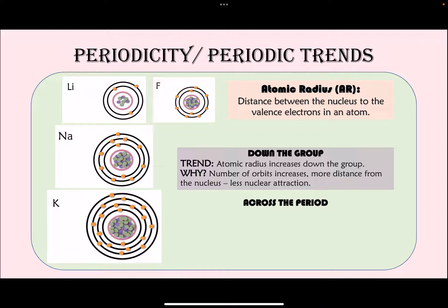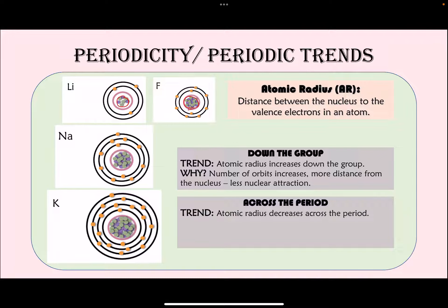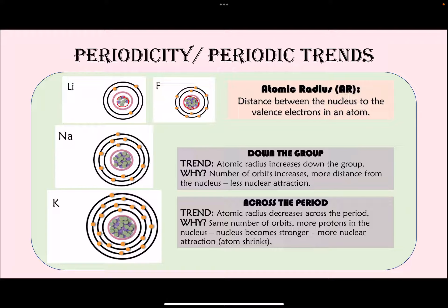Going across the period, comparing lithium and fluorine, both have the same number of orbits — but atomic radius actually decreases across the period. This is because going from lithium to fluorine the nucleus becomes heavier, meaning more protons and more nuclear attraction. The nucleus pulls the valence electrons inward, shrinking the atom, so atomic radius decreases across the period due to greater nuclear attraction.